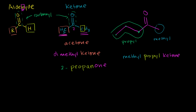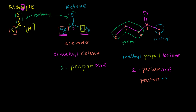For the systematic name, you look at the longest carbon chain — one, two, three, four, five carbons — so the prefix is pent. You number so the carbonyl carbon gets the lowest possible number, which means starting from the right: the carbonyl falls on carbon two. So this is 2-pentanone, or you might also see it written as pentan-2-one. Either form is acceptable.